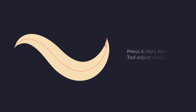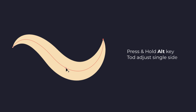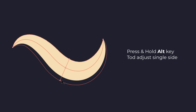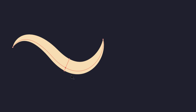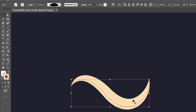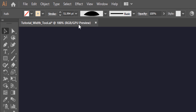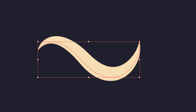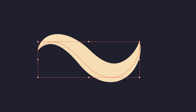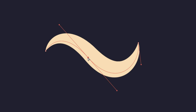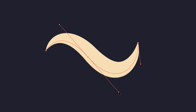If we want to edit just one side of a stroke, hold and pull up or pull down by pressing the Alt key. Like a normal stroke line, we can change the stroke weight and edit anchor points with the direct selection tool. That's all about the basic functions of the width tool.